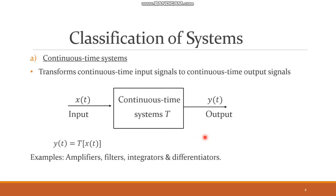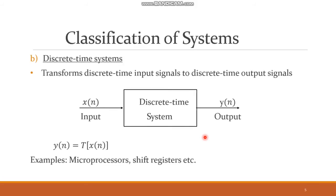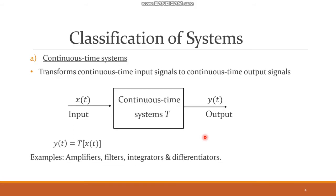Classification of systems: just like signals, systems can be classified based on their nature and characteristics in the time domain into two types — continuous time systems and discrete time systems. Continuous time systems transform a continuous time input x(t) to a continuous time output y(t), so y(t) = T{x(t)}. Examples include amplifiers, filters, integrators, and differentiators.